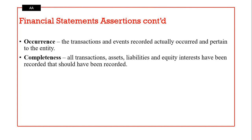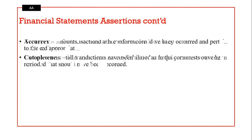Occurrence means the transactions and events recorded in the financials occurred and pertain to the entity. Completeness means all transactions, assets, liabilities and equity interests have been recorded — all transactions that should have been recorded have been recorded, and all explanations that should have been given have been given.